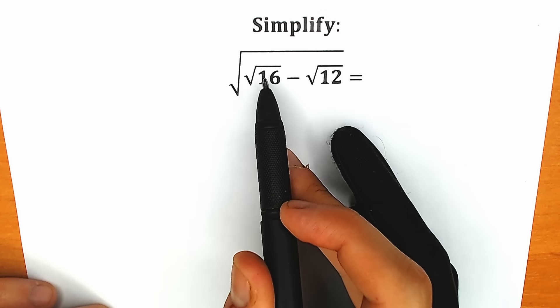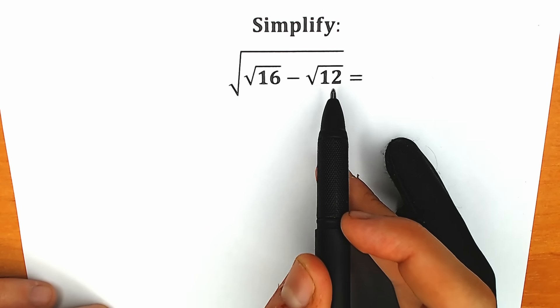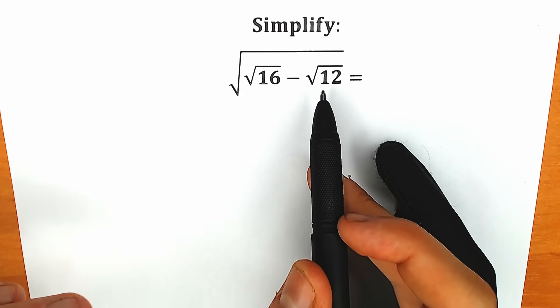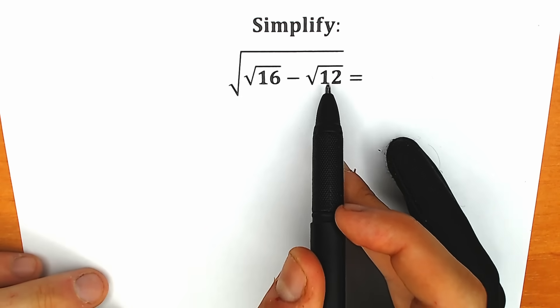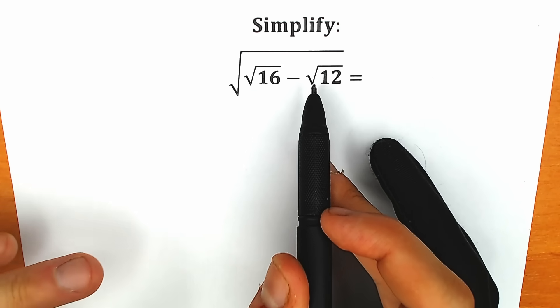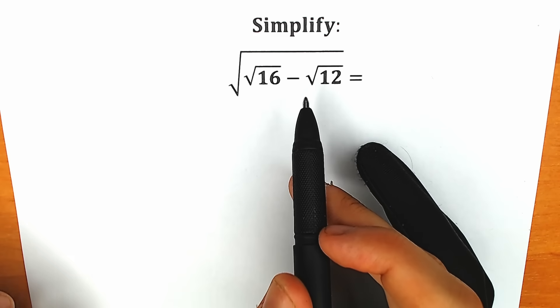Square root of... square root of 16 minus square root of 12. A lot of students might be thinking, maybe we can subtract 16 minus 12, and as a result we have square root of 4. But they go in the wrong direction.